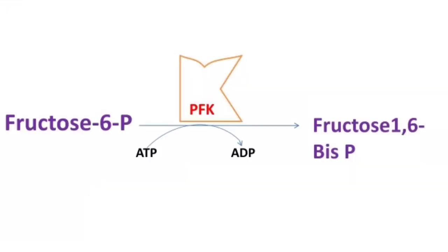For example, Phosphofructokinase is the main regulatory enzyme of glycolysis — it is an example of a key enzyme or rate-limiting enzyme. Phosphofructokinase is also known as an allosteric enzyme. Details of allosteric enzymes are explained in another video; you can check the i-button for this and I will also provide the link in the description.